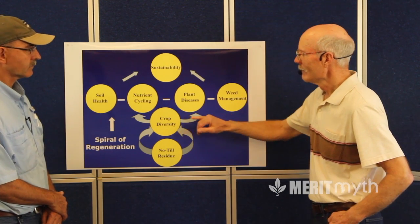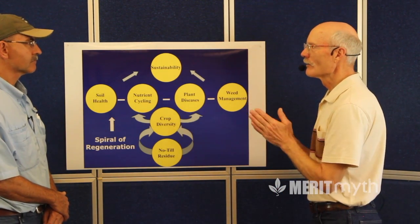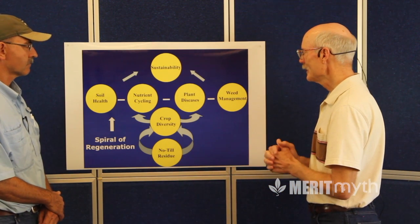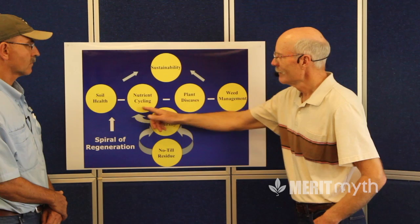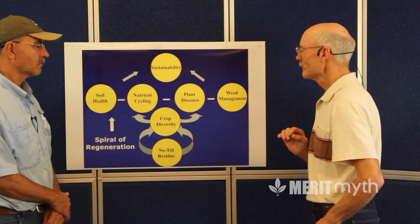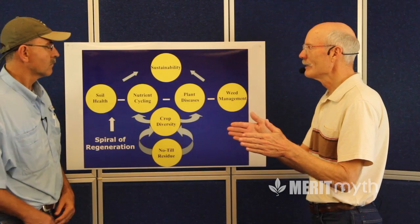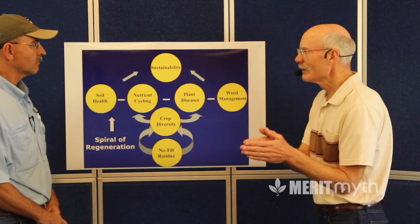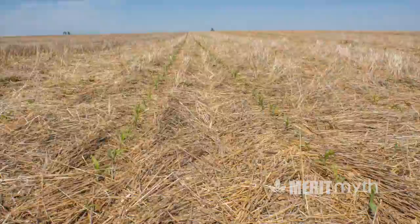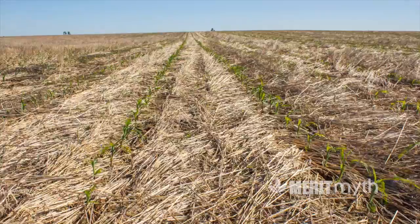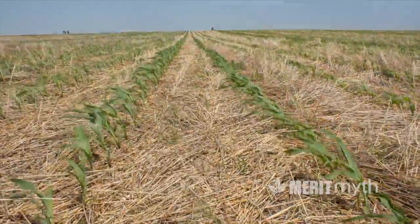Another benefit is weed management. Initially, we expected a benefit from crop diversity because when you grow a sequence of crops with different life cycles, that gives you more opportunities to control weeds. But we noticed a second benefit that was completely surprising to us: crops are more tolerant of weeds. There was a study in Pennsylvania where two treatments were imposed for 25 years — cover crops versus tillage. The soil with cover crops was much healthier, and when they compared the impact of weeds on corn grown in healthy soil versus conventional soil, they found that corn was five times more tolerant of weeds with the same amount of infestation.